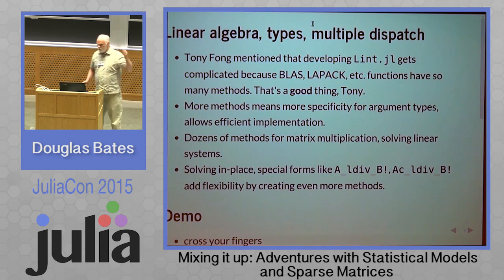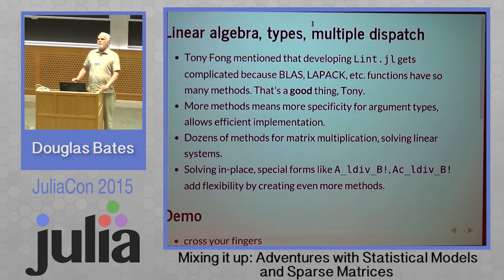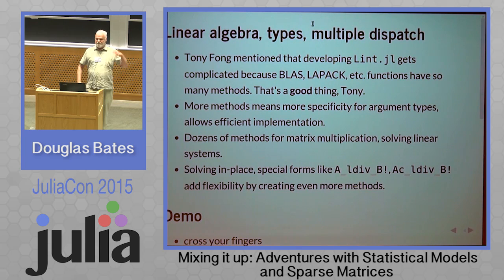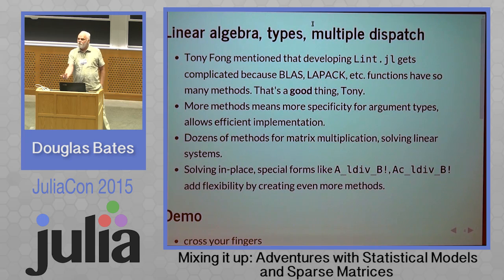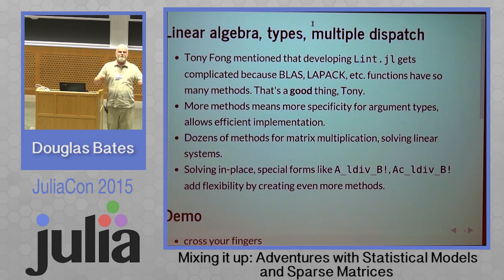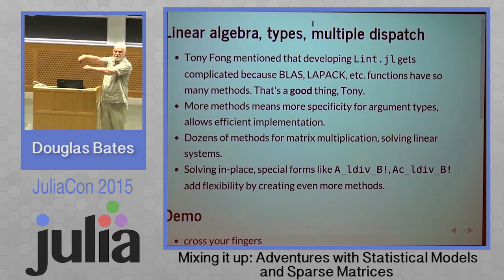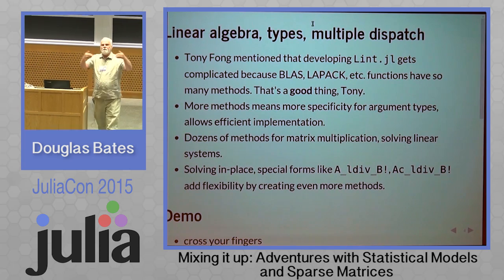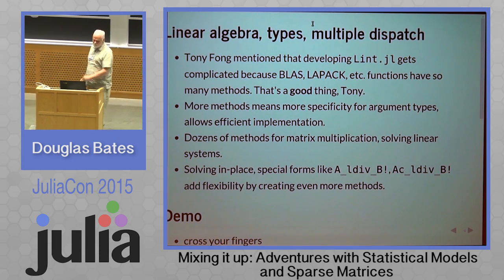Everything that you learned about linear algebra in a course is wrong. There isn't a well-defined rank, you don't use inverses, and you always end up cutting these matrices apart into pieces. We can do things like solve in place — you have one of these things on the left, one on the right, do a particular operation, write it back, and dispatch on all these special types. It's very, very important.